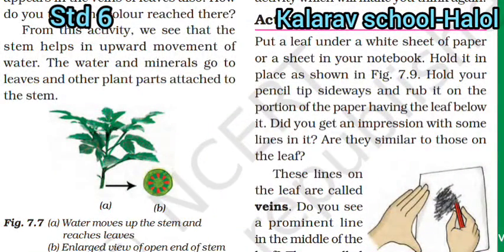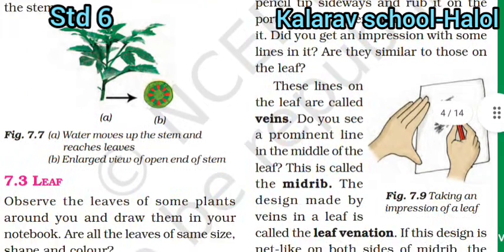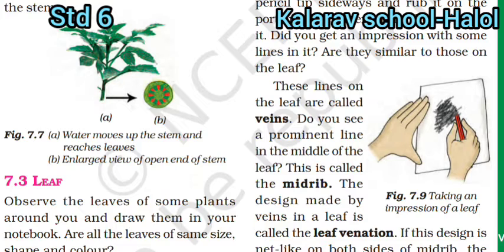Activity 3: Put a leaf on a white sheet of paper or in your notebook and hold it in place. These lines on the leaf are called veins. Do you see a prominent line in the middle of the leaf? This is called the midrib.